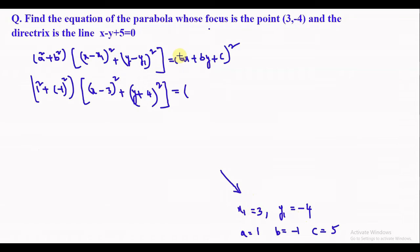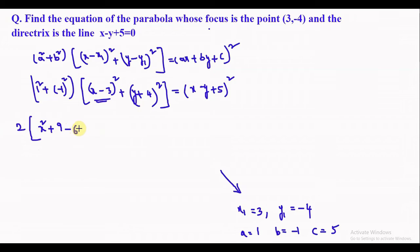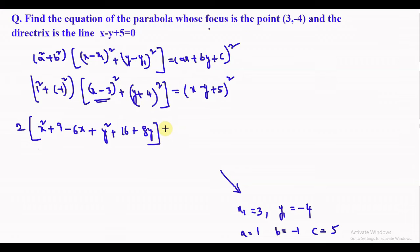This equals (ax plus by plus c) whole square, which is (x minus y plus 5) whole square. Solving the left side: 1 squared plus 1 squared is 1 plus 1 equals 2. So we get 2 into: (x minus 3) whole square expands as x squared plus 9 minus 6x, plus (y plus 4) whole square expands as y squared plus 16 plus 8y. This equals (x minus y plus 5) whole square.